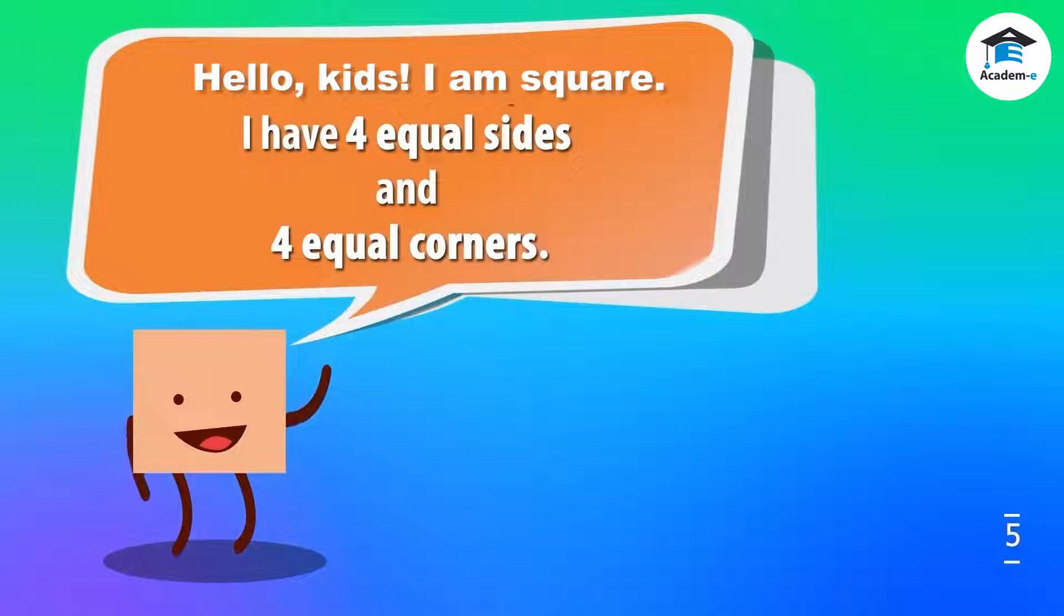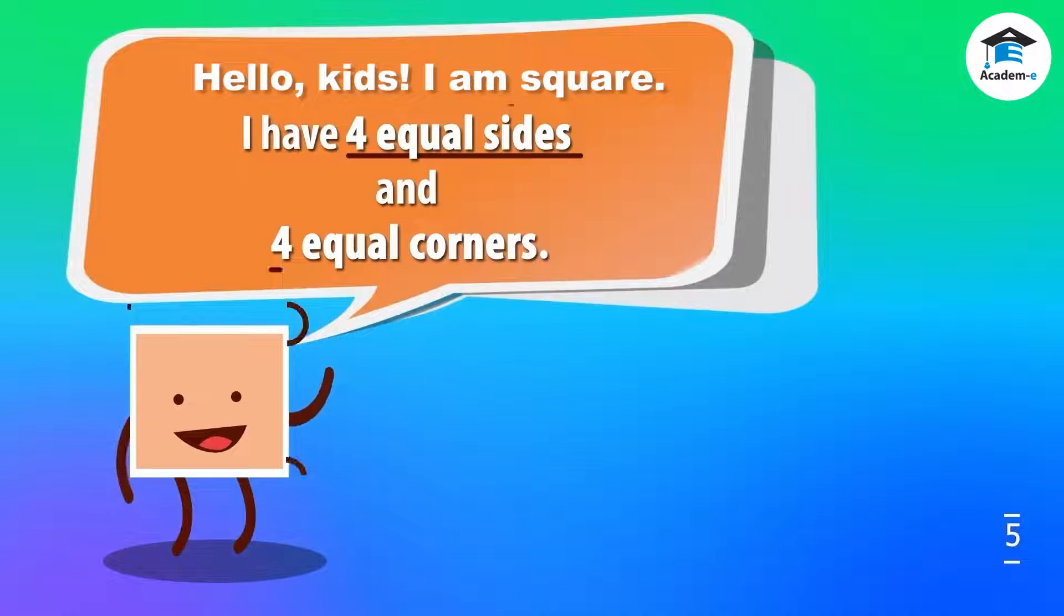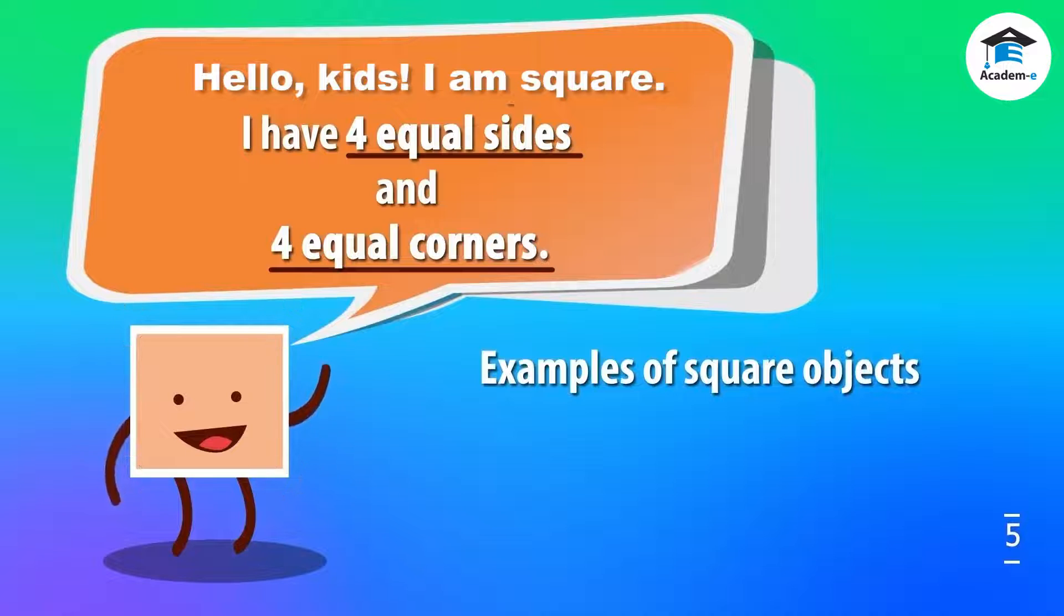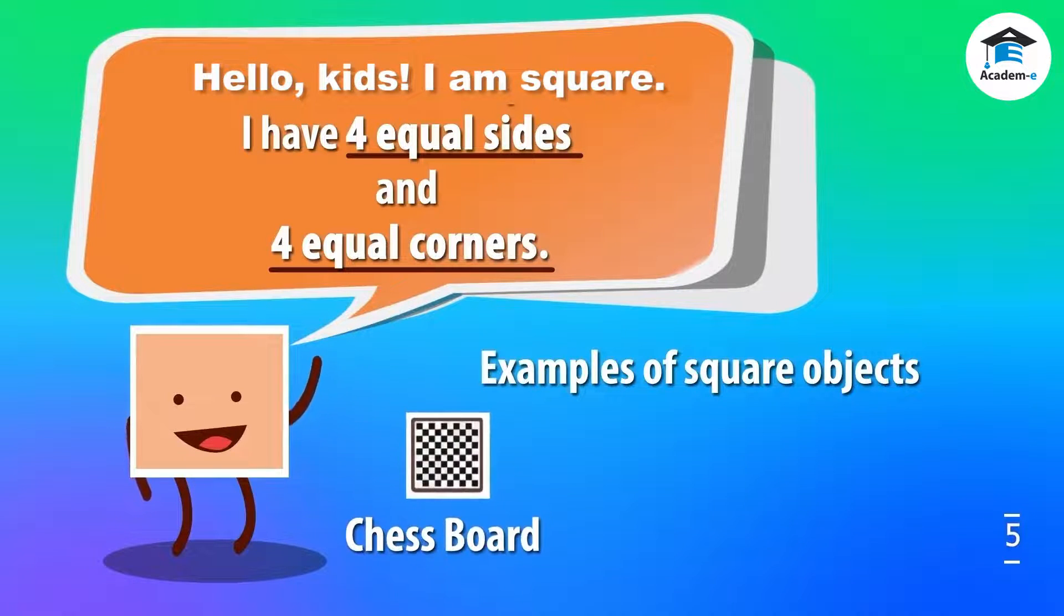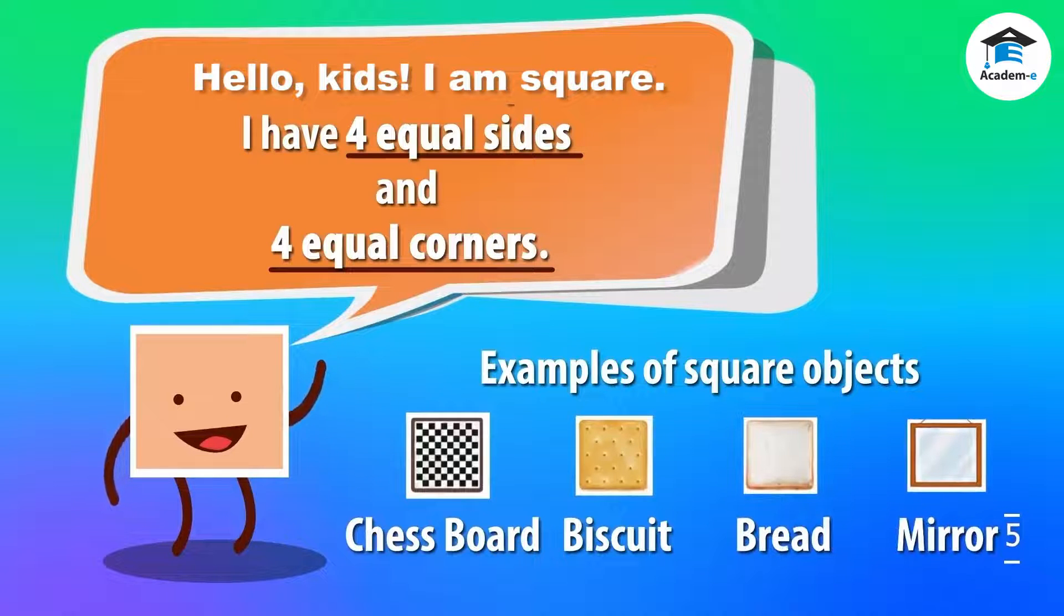Hello kids, I am square. I have four equal sides and four equal corners. Here are the examples of square objects that you can see around you: we have here a chessboard, a piece of biscuit and bread, and a mirror.